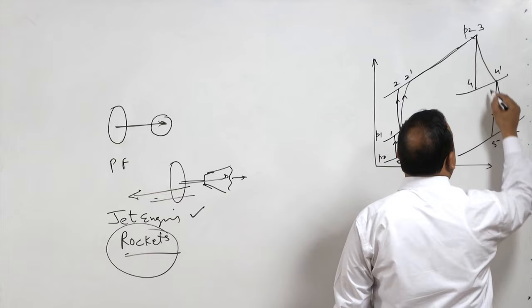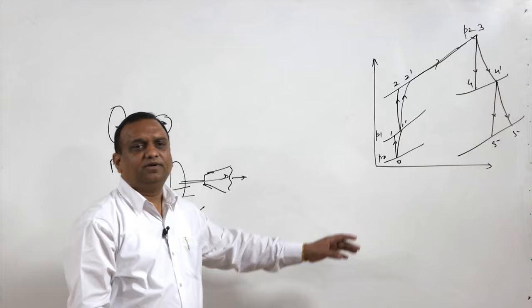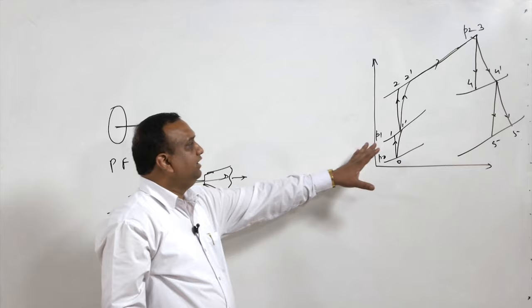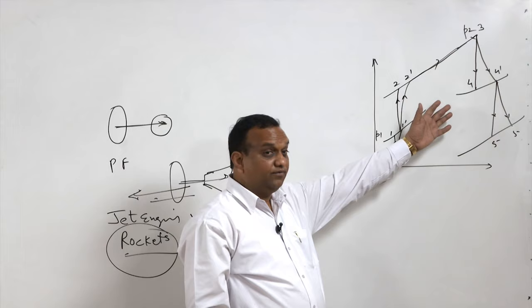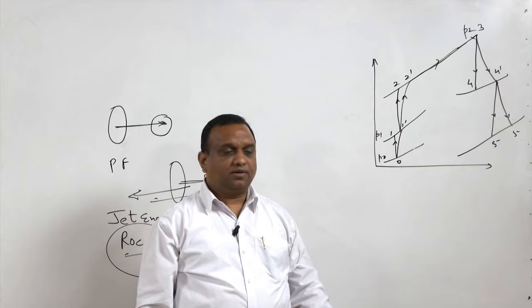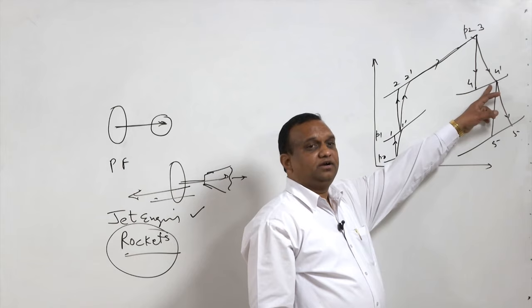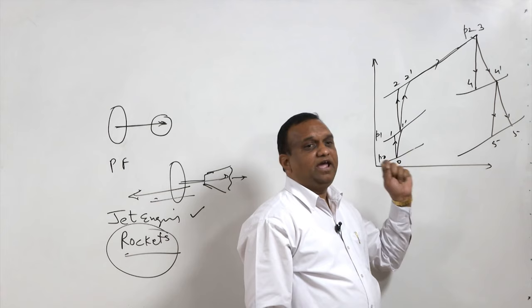This entire process is very similar to the gas turbine arrangement. The only difference is that in gas turbines the turbine output is used for power generation, but here the main purpose of the turbine is to run the compressor. The gases at the exit of the turbine, which are at high pressure and temperature, are expanded in a nozzle, and the very high velocity gas leaving the nozzle causes the propulsive force.